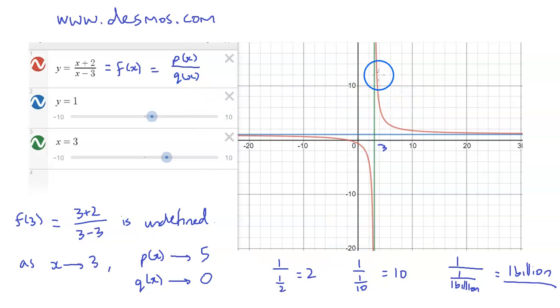And so that's why the function shoots upwards towards infinity here, as x is getting closer and closer towards 3 from the right-hand side. And on the left-hand side, as x is getting closer and closer towards 3 from numbers that are smaller than 3, we can see that we have the opposite effect happening.